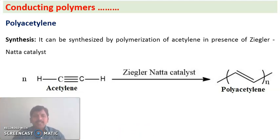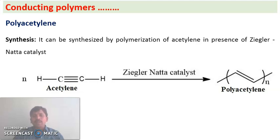Now we will discuss polyacetylene synthesis. Polyacetylene is prepared from acetylene using a catalyst called Ziegler-Natta catalyst. The Ziegler-Natta catalyst is a combination of two components: a main compound — titanium, zirconium, or hafnium compounds — and a co-catalyst consisting of organometallic compounds. Together these form the Ziegler-Natta catalyst.